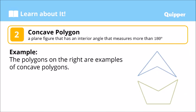Now, what is a concave polygon? It is a plane figure that has an interior angle — take note of the article 'an', meaning just one. Even just one of its interior angles measures more than 180 degrees, then we call that a concave polygon.